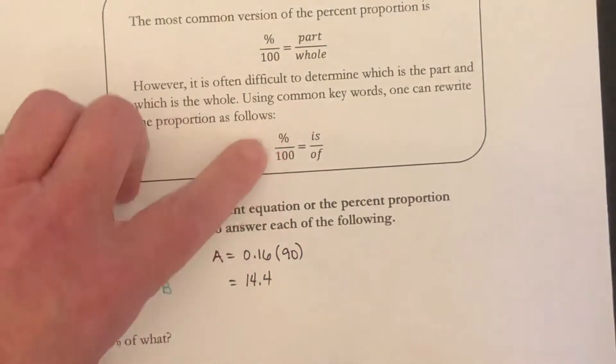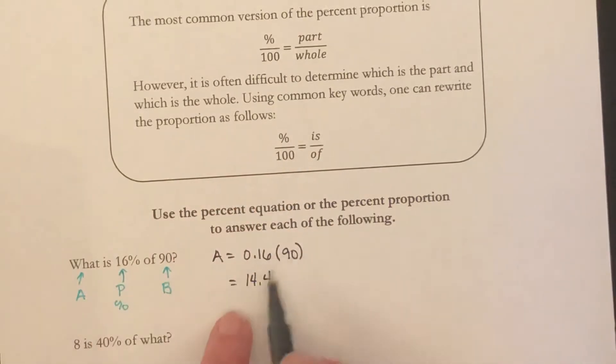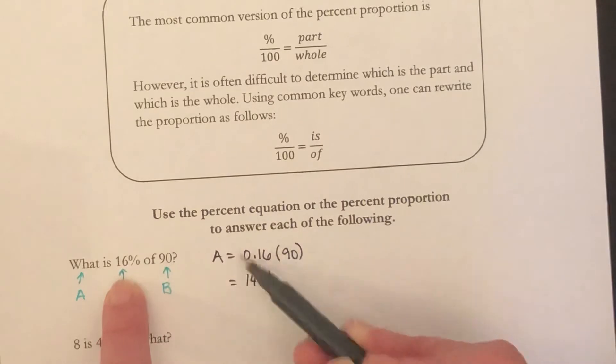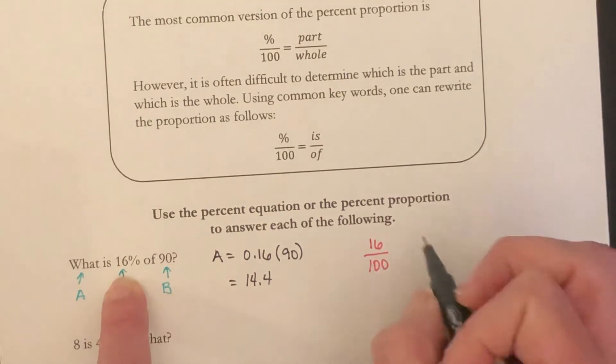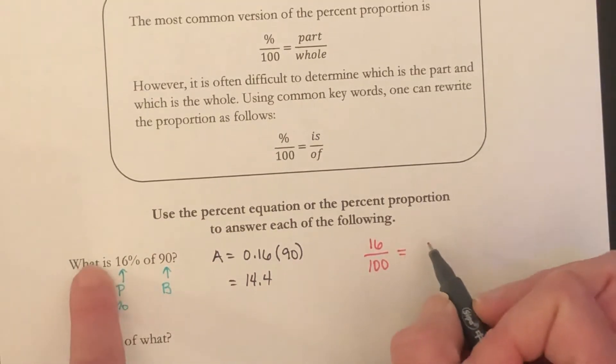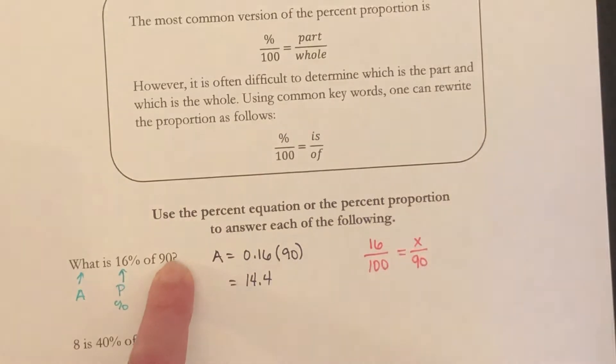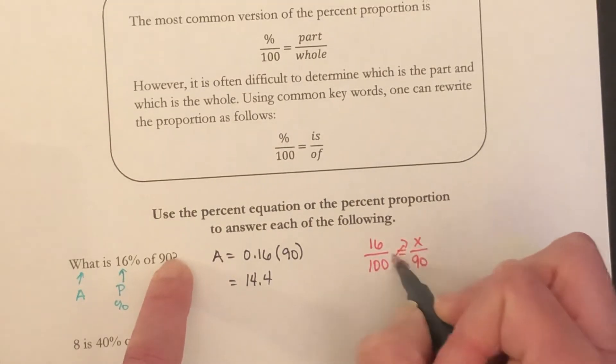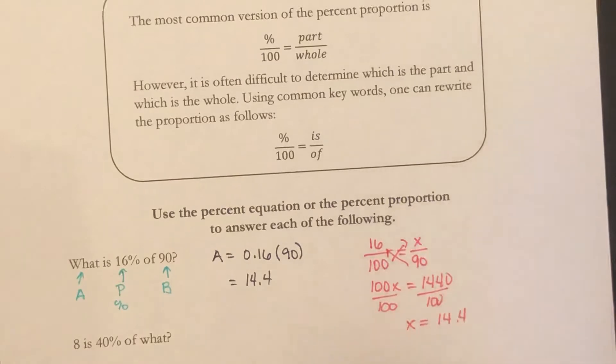Now let's do this using the percent proportion. The percent, because this is over 100, we do not need to convert it to a decimal. Same thing's happening here, but I'm just going to do 16 over 100. This is always 100, equals is, is is the part we're missing, so I'm going to put an x there, of 90, is over of. Then to solve this, we cross multiply. You get 100x equals 16 times 90 is 1440. Divide by 100, and you get that x equals 14.4. So you get the same answer no matter what.